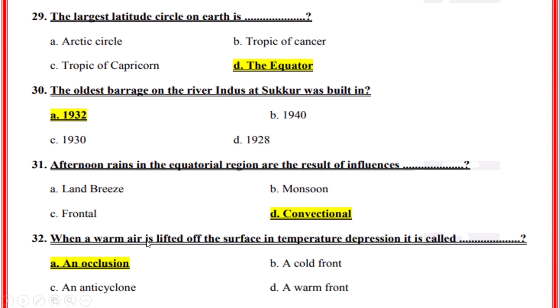When a warm air is lifted off the surface in temperature depression, it is called? Correct option: A, An occlusion.